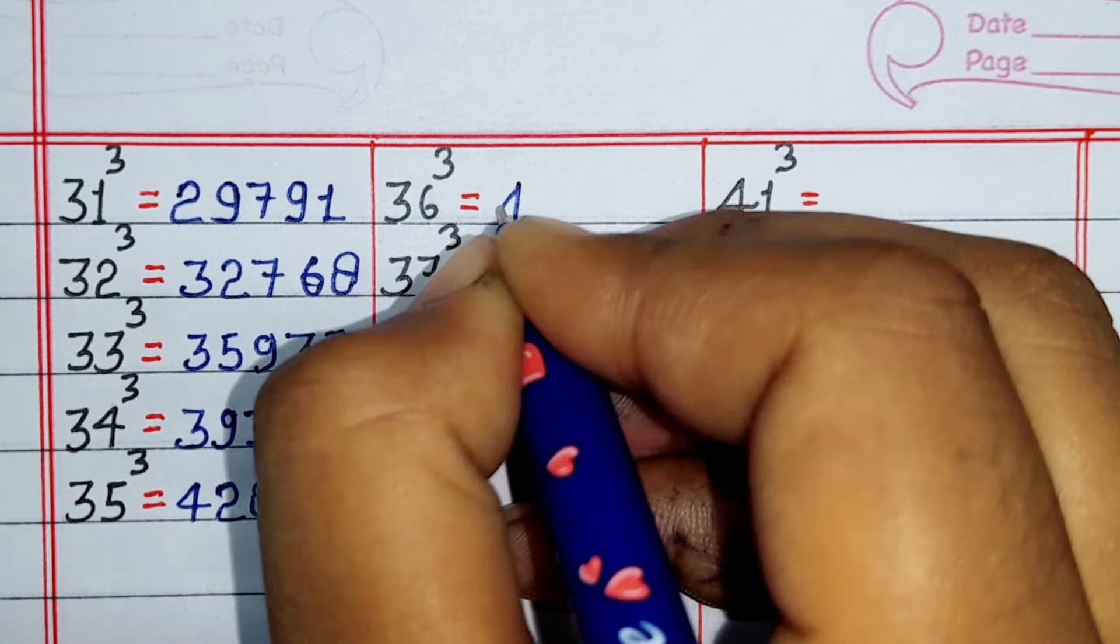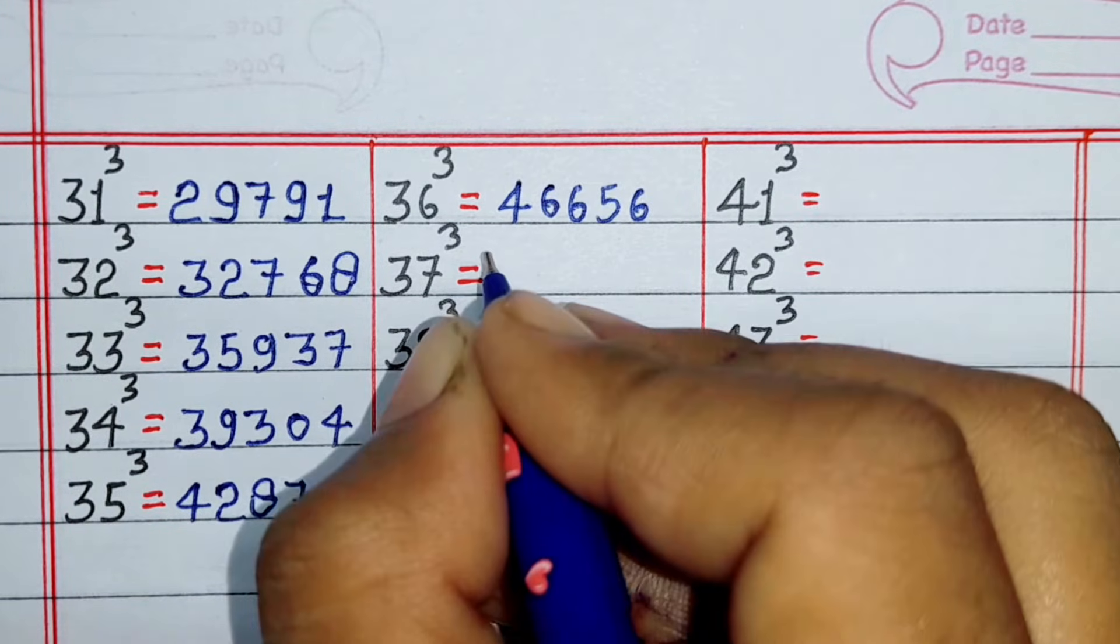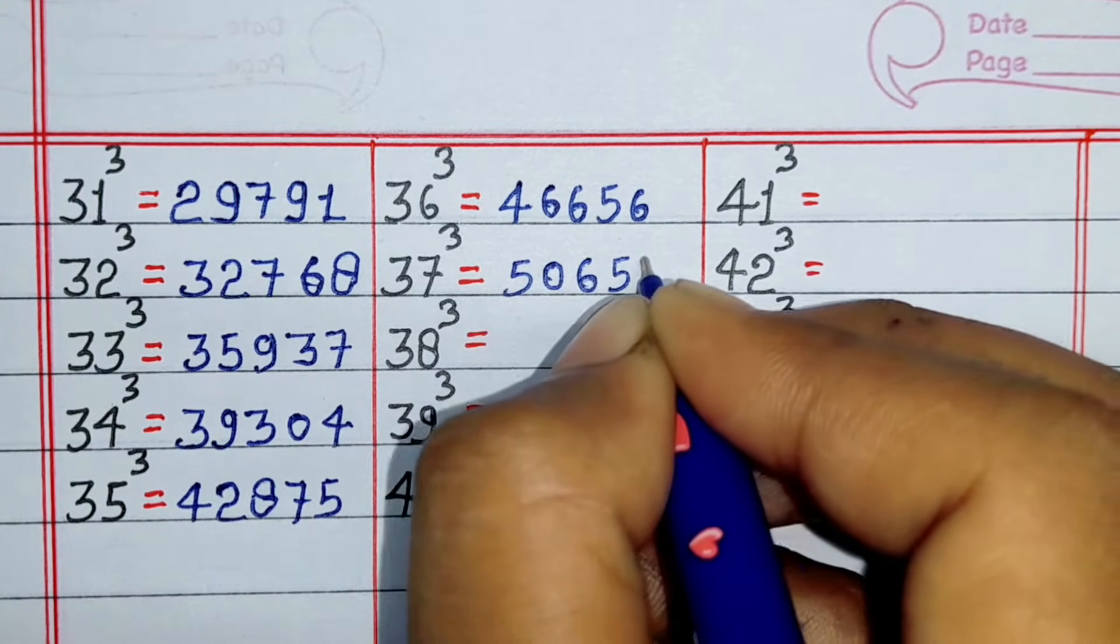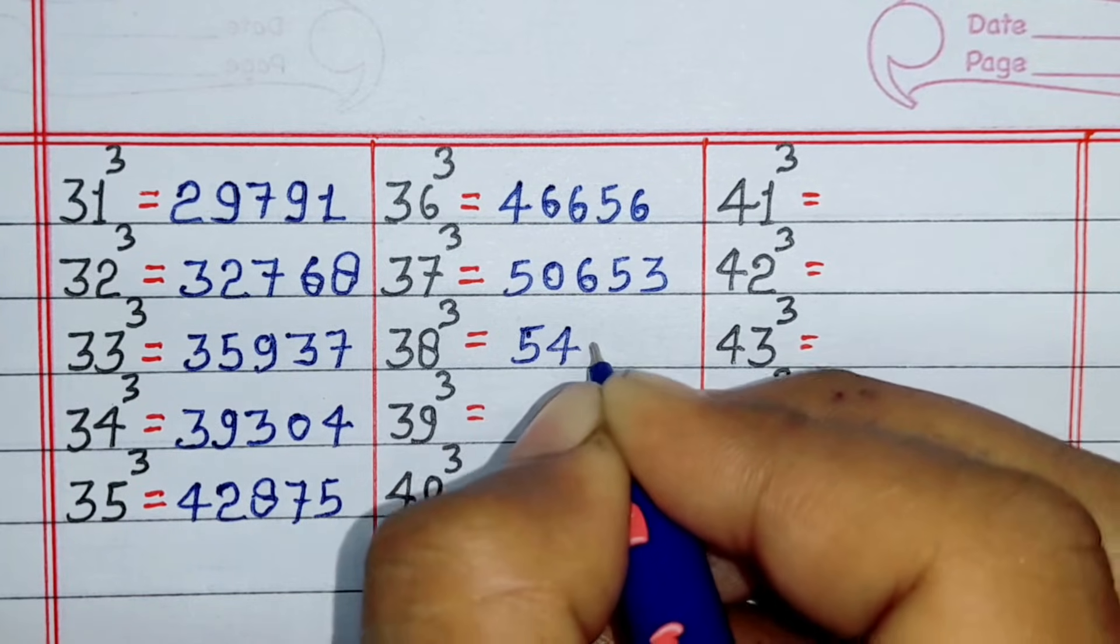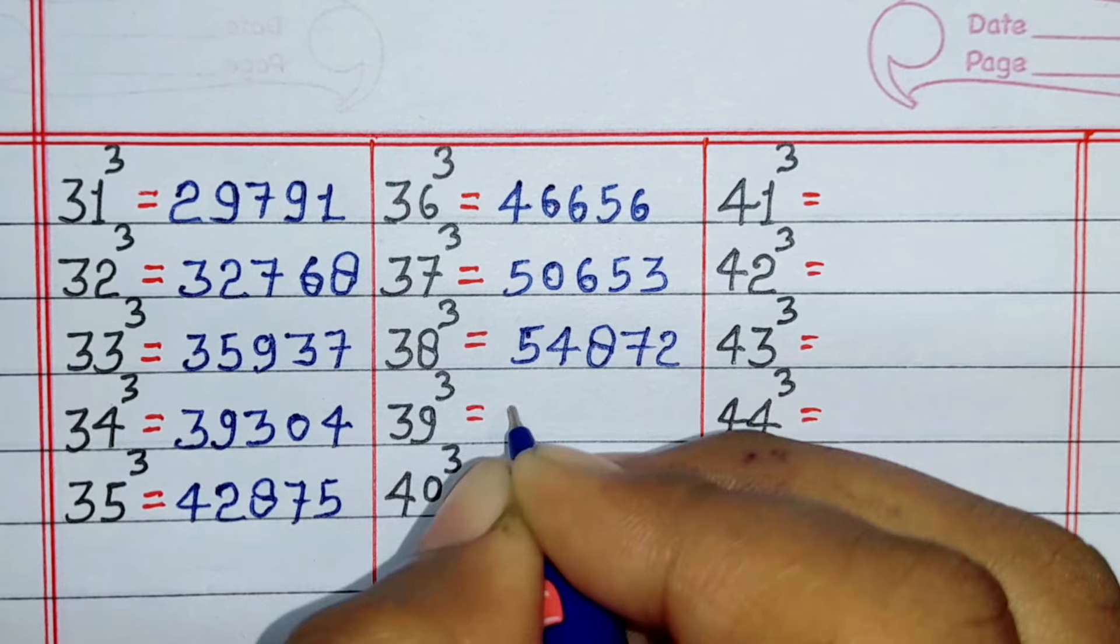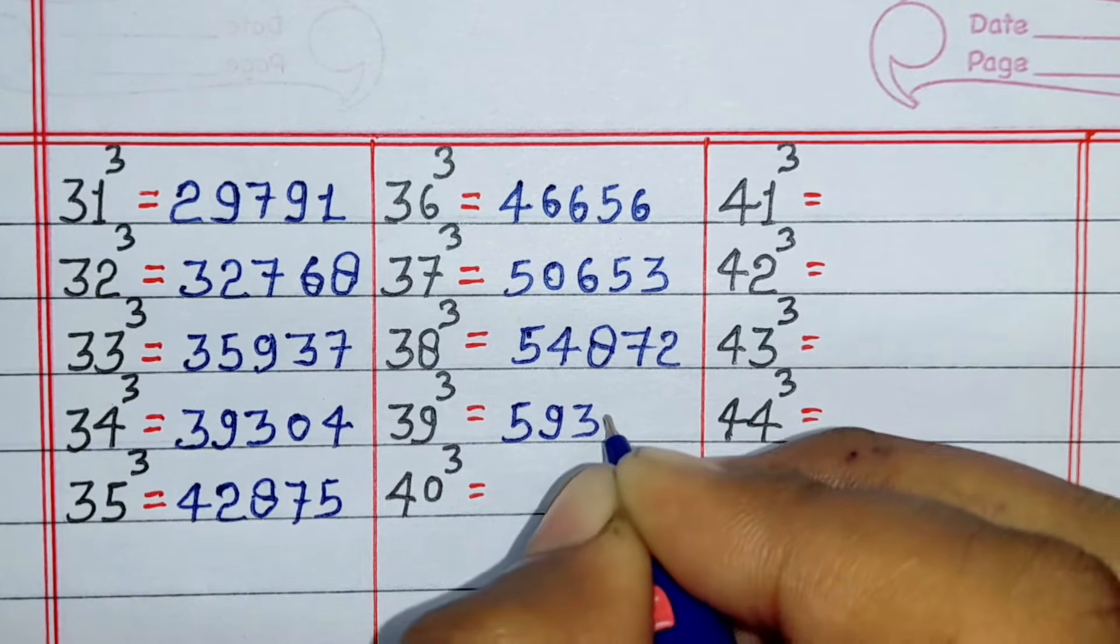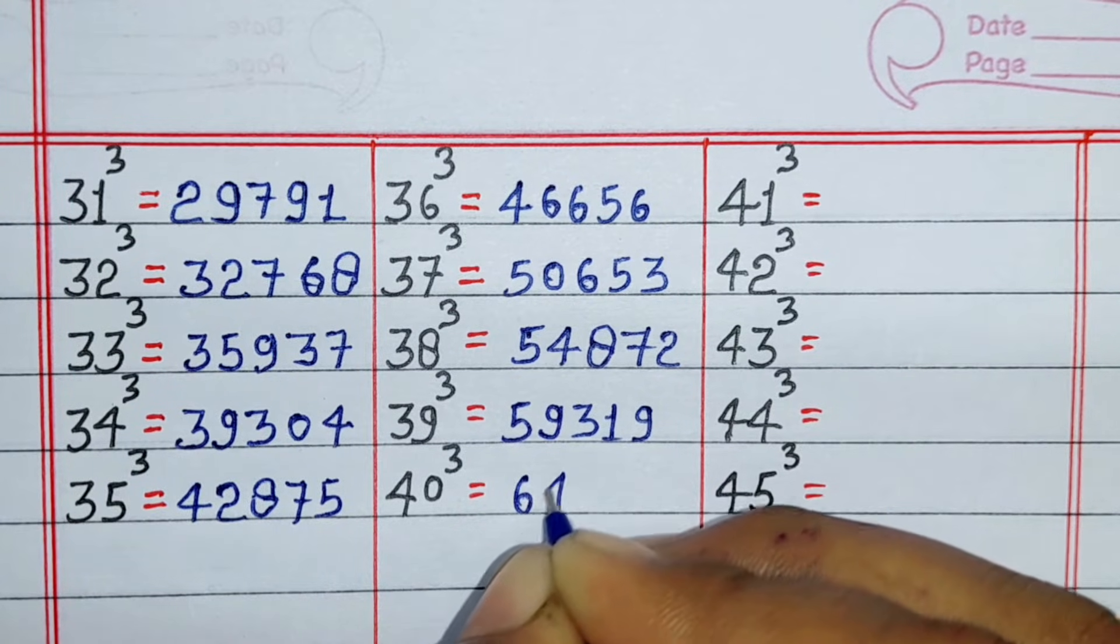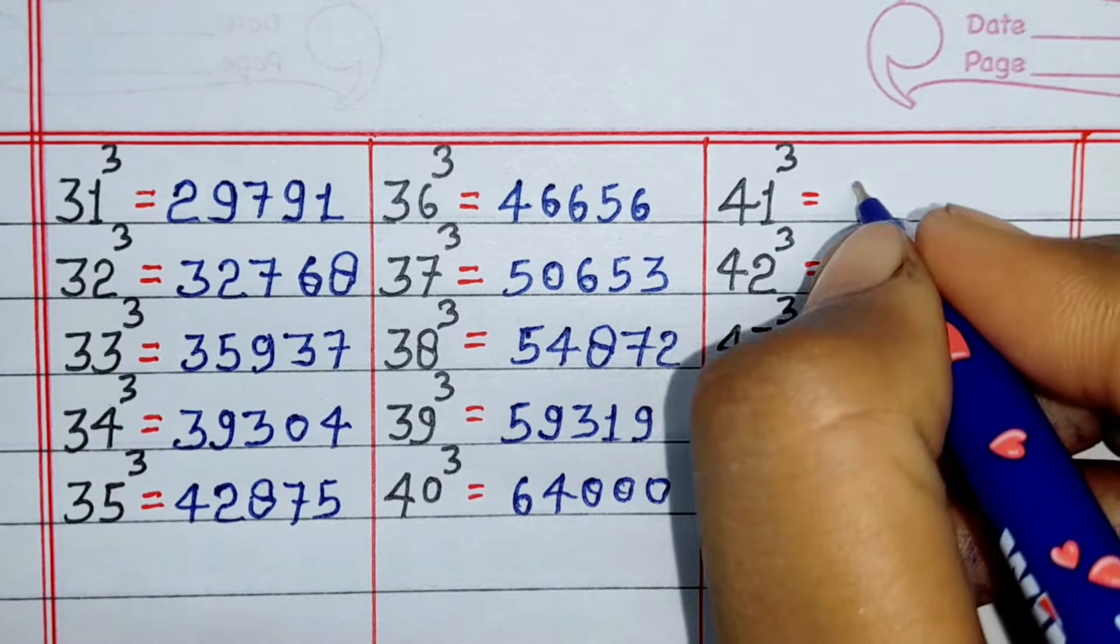Cube of 36 is 46656, cube of 37 is 50653, cube of 38 is 54872, cube of 39 is 59319, cube of 40 is 64000.